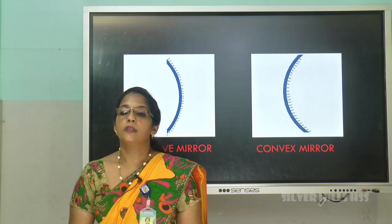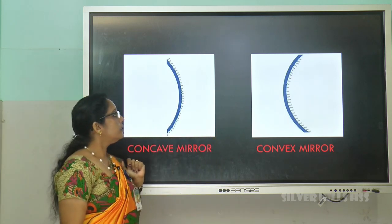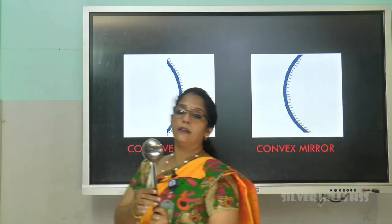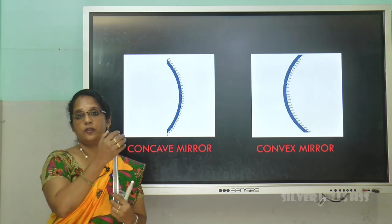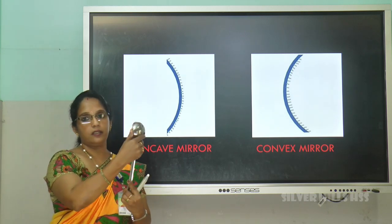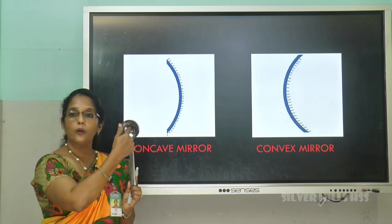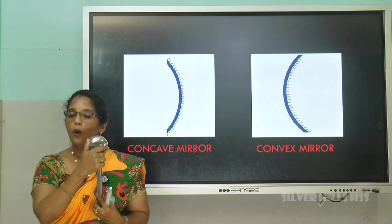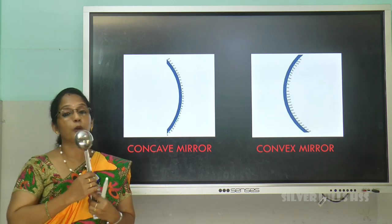Can you give some examples of where we see these mirrors? A spoon acts as a curved mirror. A spoon has two surfaces — one inward and one outward. The inside of the spoon acts as a concave mirror, whereas the outside of the spoon acts as a convex mirror. So a shiny spoon is an example of a curved mirror.